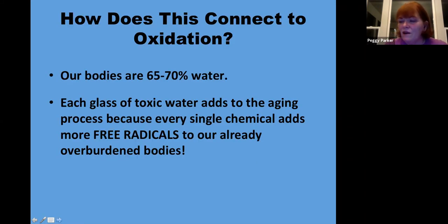Now, how does this all connect to oxidation and our cells and how we go about living our lives? Since our bodies are, depending on the tissue, an overall aggregate number would be that our bodies are 65 to 70 percent water, or at least they're supposed to be. Each glass of toxic water that you drink adds to the aging process because every single chemical adds more free radicals to our already overburdened bodies. Remember, we have about 100 trillion cells, and each one of those 100 trillion cells is bombarded by 10,000 free radicals every day. So every glass of toxic water adds to that whole process of oxidation and aging.